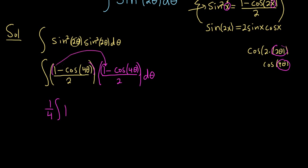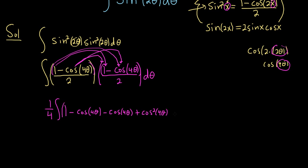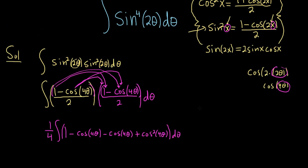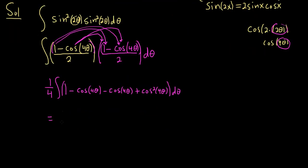Distributing: 1 times 1 is 1; 1 times negative cosine 4 theta is negative cosine 4 theta; negative cosine 4 theta times 1 is another negative cosine 4 theta; and cosine 4 theta times cosine 4 theta is plus cosine squared of 4 theta. Combining the like terms gives 1 fourth times the integral of 1 minus 2 cosine 4 theta plus cosine squared of 4 theta, d theta.